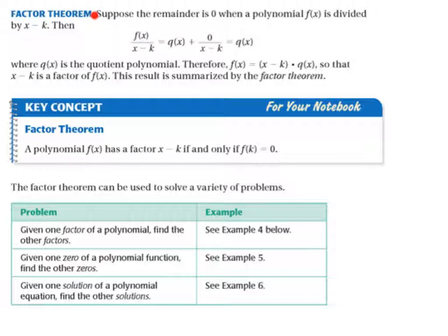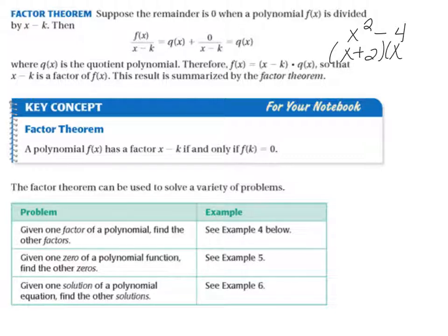The Factor Theorem: suppose the remainder is zero when a polynomial is divided by x minus k. So we've got a polynomial, we divide by x minus k, and we get a quotient and a zero — we don't have a remainder. That just means that x minus k is, in fact, a factor of the polynomial.